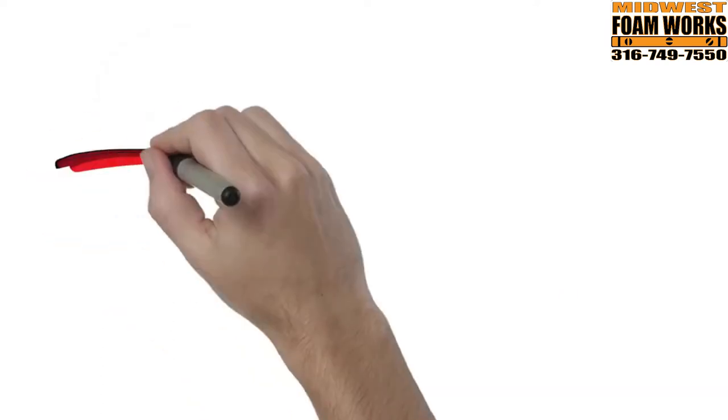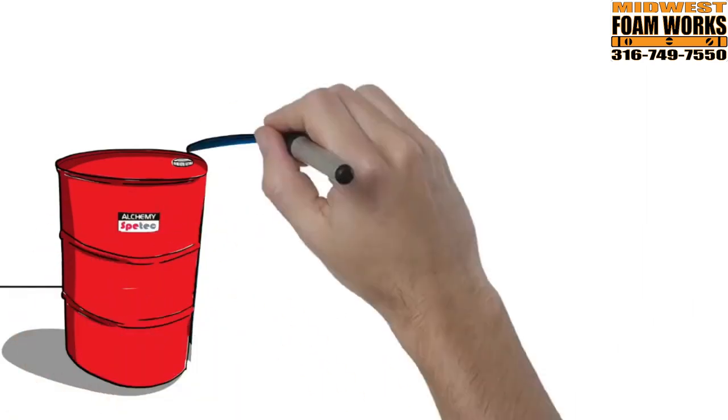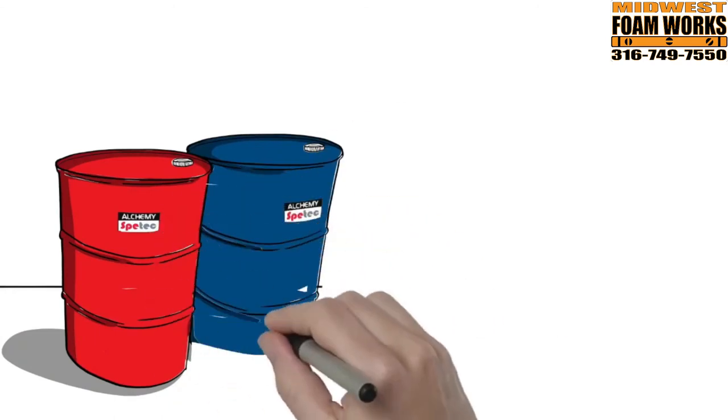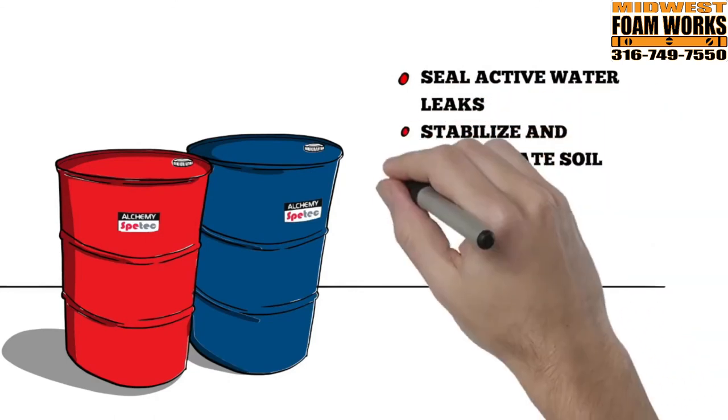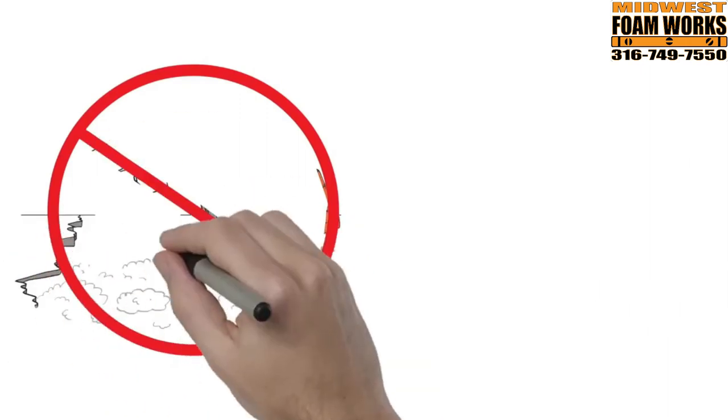Alchemy Spetec manufactures polyurethane for concrete repair projects. Specialized contractors use our line of polyurethane and acrylate resin products to seal active water leaks, stabilize and consolidate soil, lift concrete slabs. Why risk a lawsuit or damage to property and person?